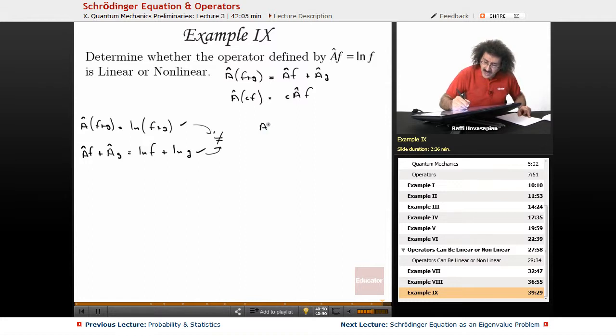So we have A(cf) equals the natural logarithm of (cf) and, oops, go ahead and put a little caret there. c of A(f). Let's see, c of A(f). You know what? I can probably do a little bit more with this one.